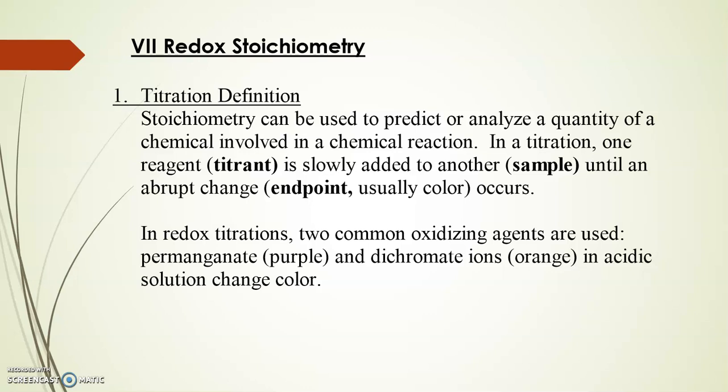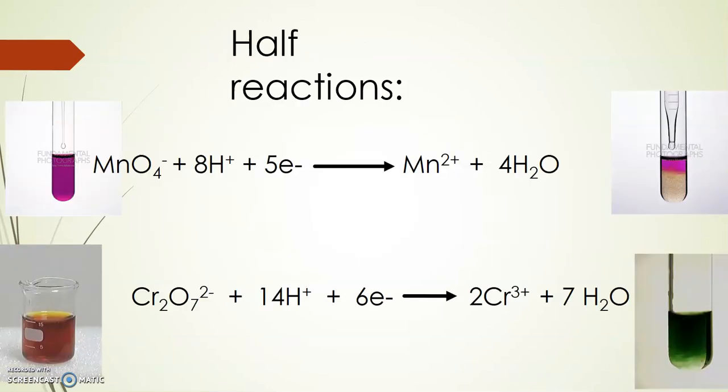What is unique in redox stoichiometry is that we have two common oxidizing agents that are strong and change color. The first one is MnO4-, the permanganate ion. It is purple and when it reacts to become Mn2+, it turns colorless. The other good oxidizing agent we can use for redox stoichiometry is dichromate which starts off orange and turns a greenish color. So they're both strong oxidizing agents that change color.